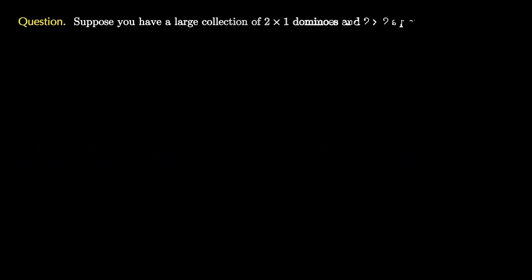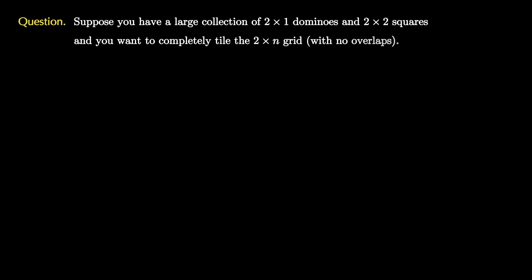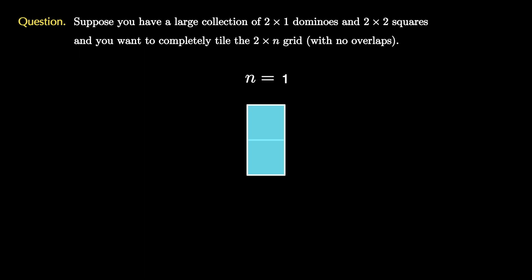Suppose we have a large number of 2 by 1 dominoes and 2 by 2 squares, and we want to completely tile the 2 by n grid with no overlaps. When n equals 1, there is only one such tiling pictured here, where we place one domino vertically.